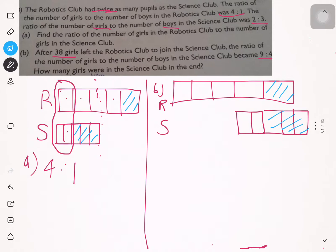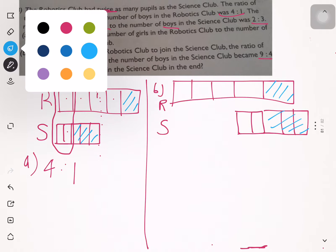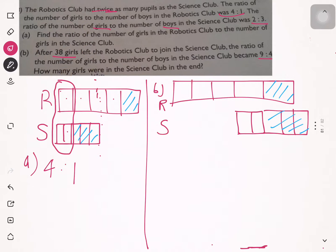This is a before-and-after model. For the after model for the science club, the ratio becomes 9:4 — so four units for boys: one, two, three, four.